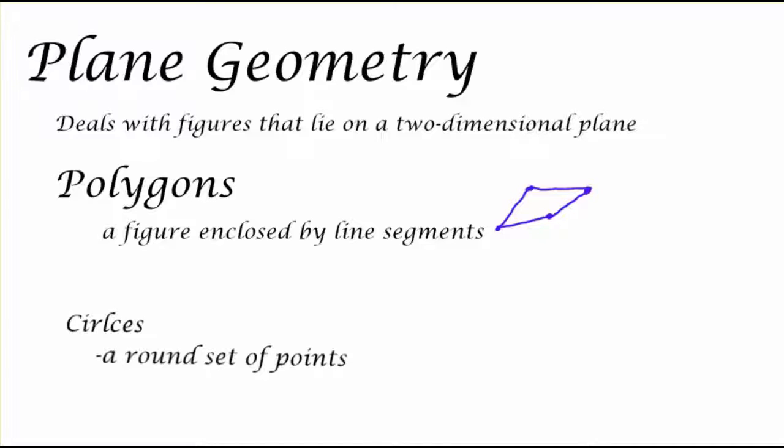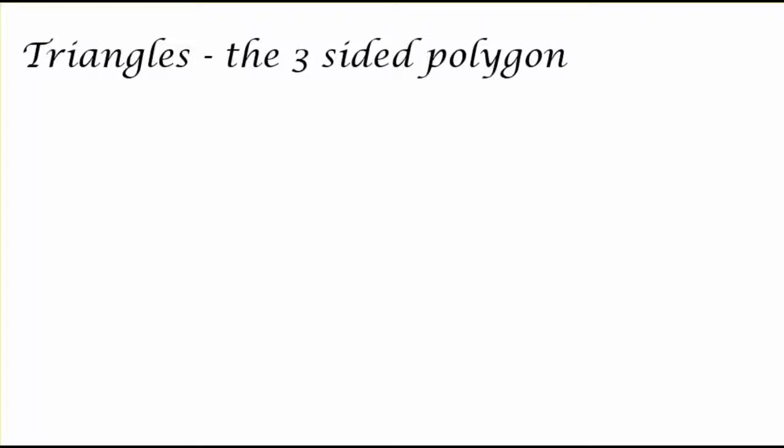Now a very common figure that we know about is a circle. A circle is a round set of points, and it's important to know that although they're very important, a circle is not a polygon. It's just a rounded set of points.